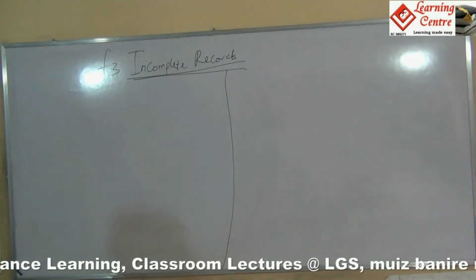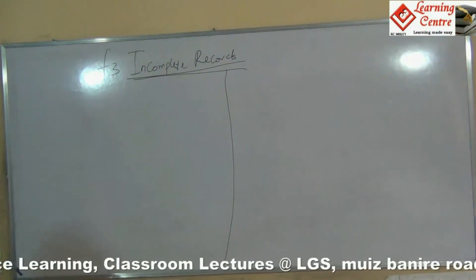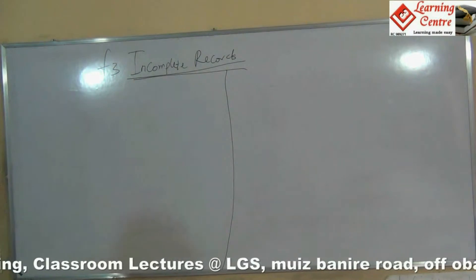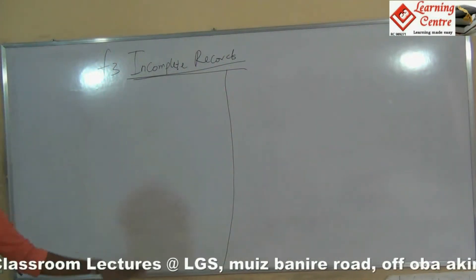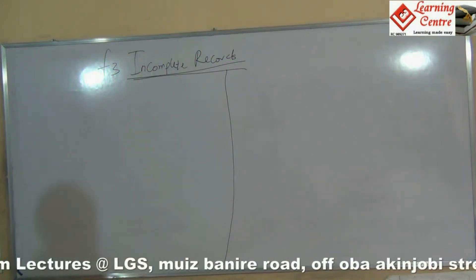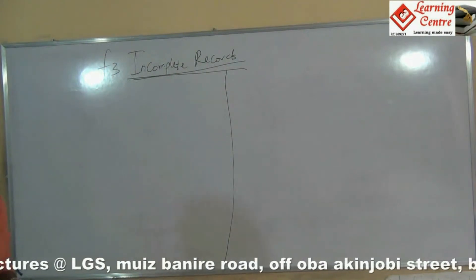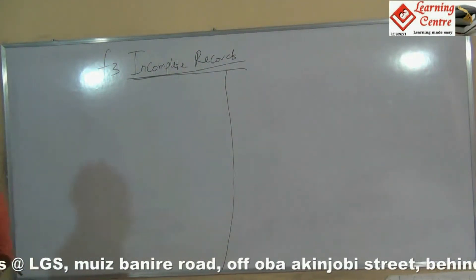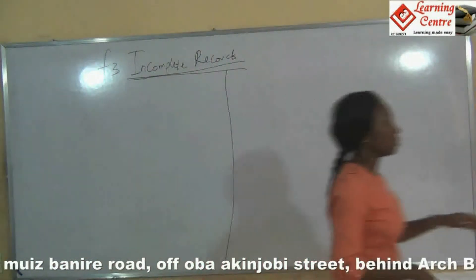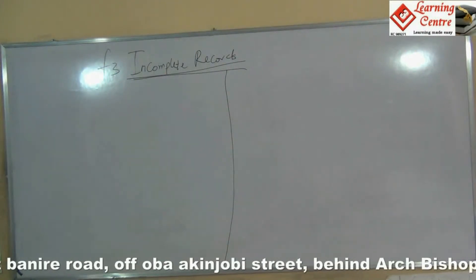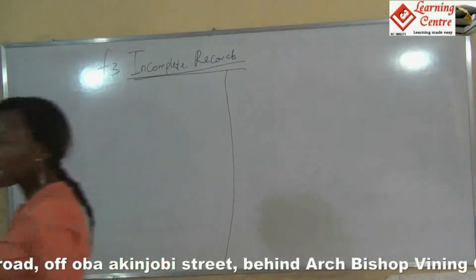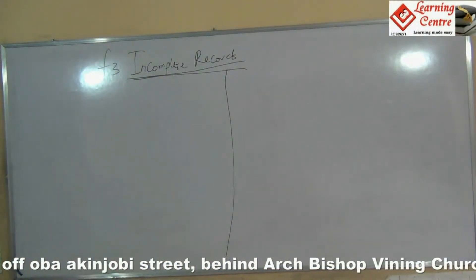As an accountant, the overall goal is for us to prepare our financial statements at the end of the year. So we need different records — our receivables, payables, cash, and fixed assets register — to determine all the information needed for the financial statements. That is actually the reason why, when our records are not complete, it becomes difficult to prepare our financial statements.